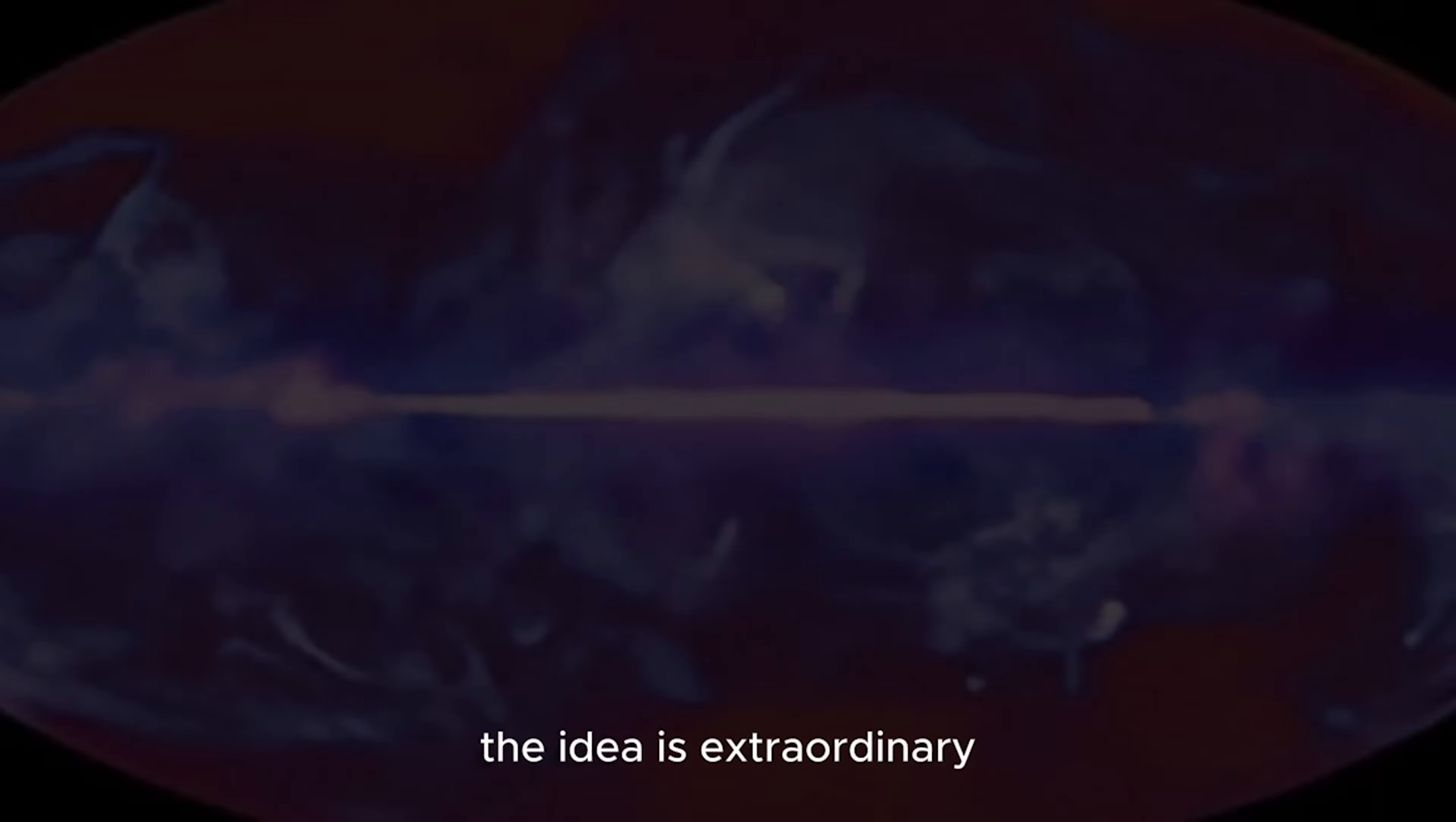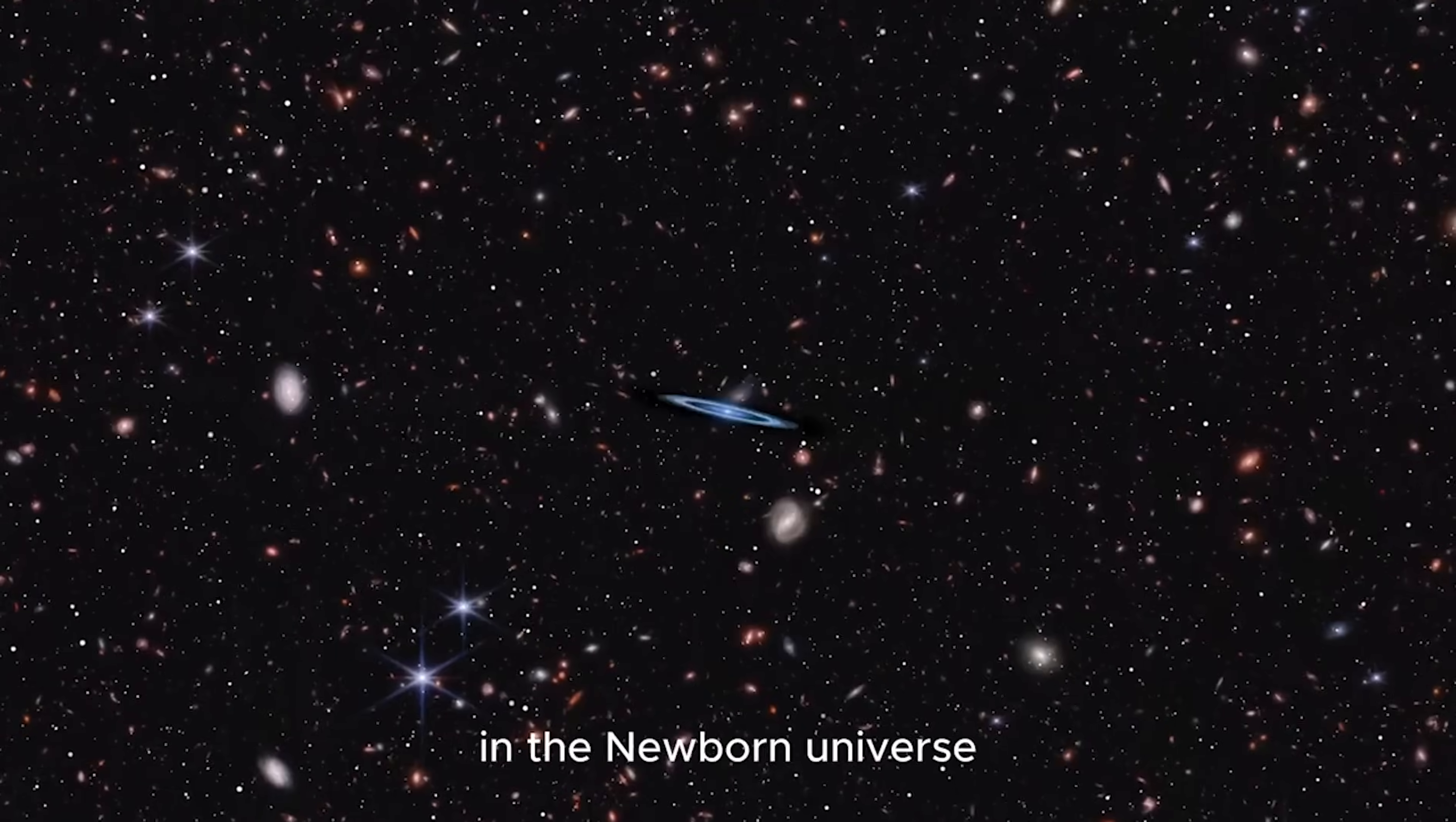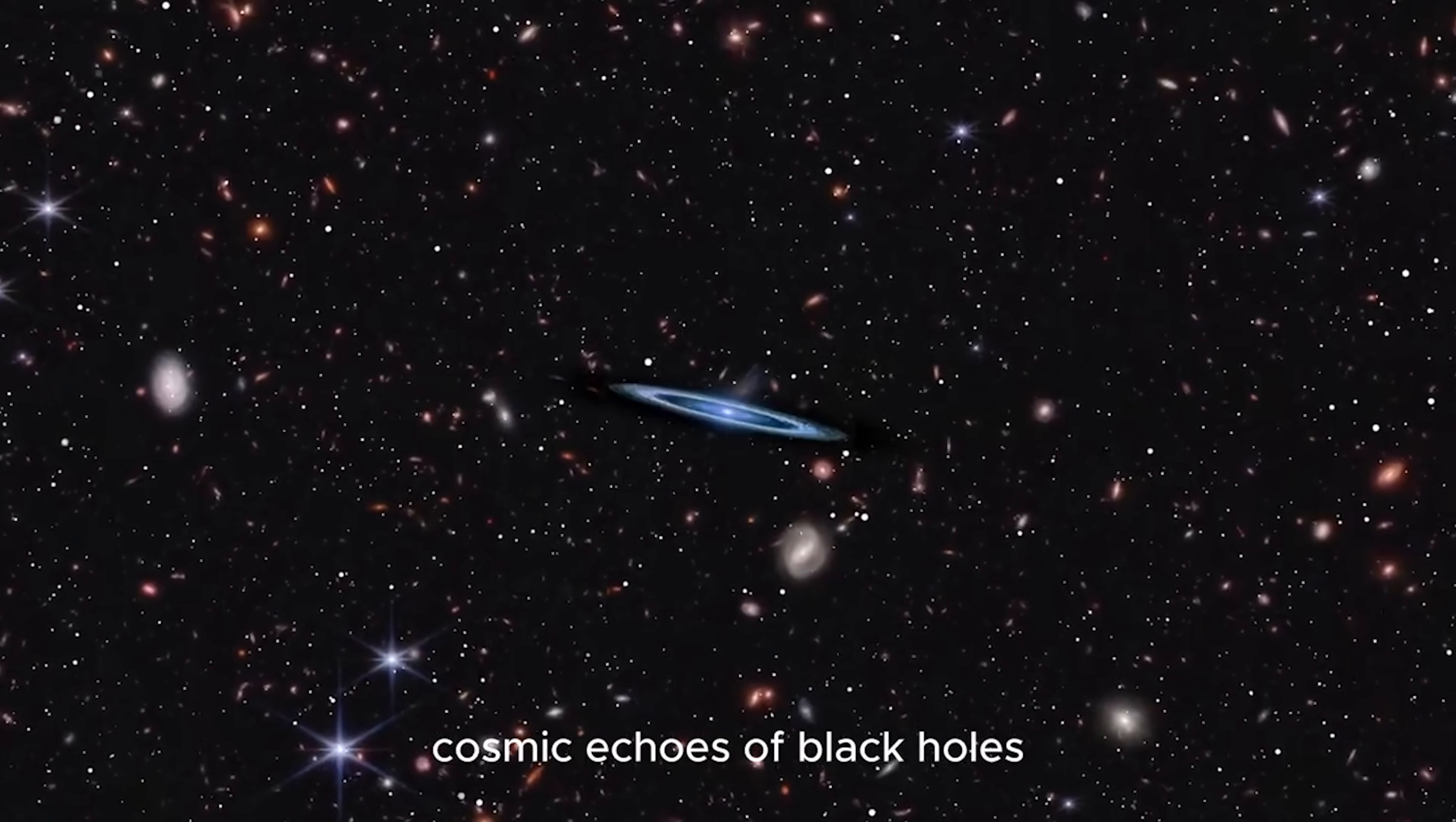The idea is extraordinary. At the end of each cosmic era, supermassive black holes slowly evaporate through Hawking radiation, releasing energy that doesn't vanish but is carried forward into the next universe. In the newborn universe, these leftover photons appear as glowing disks in the microwave background, cosmic echoes of black holes that existed before our Big Bang.